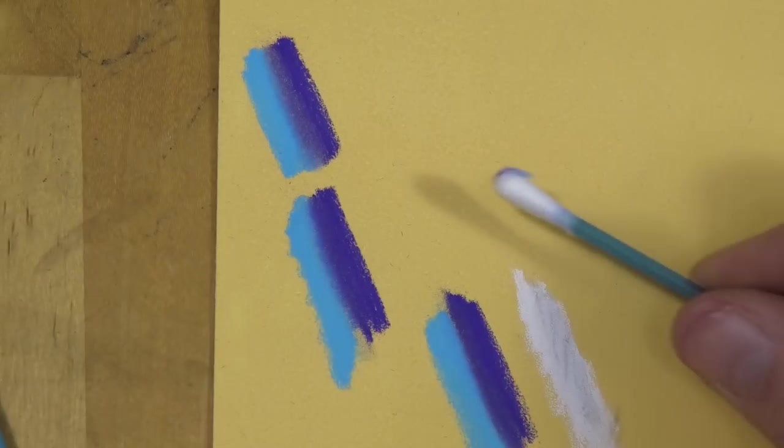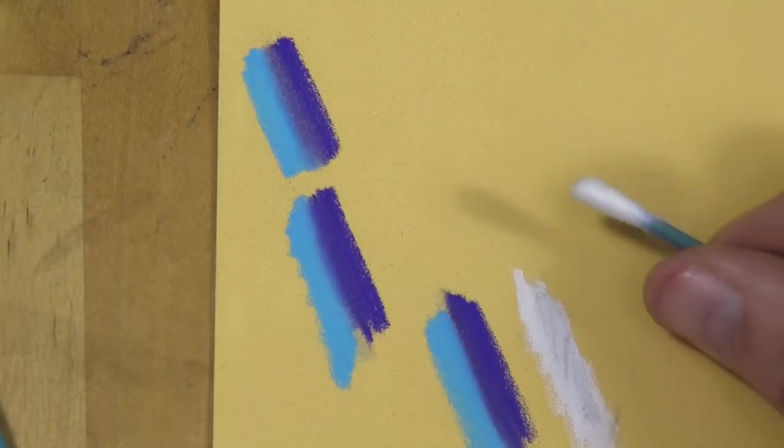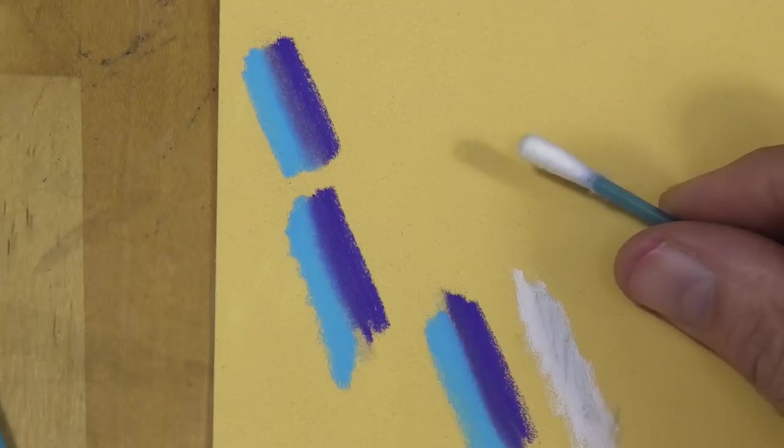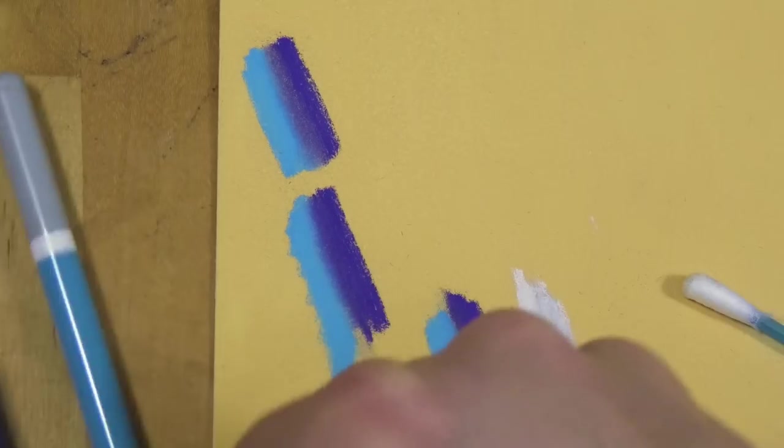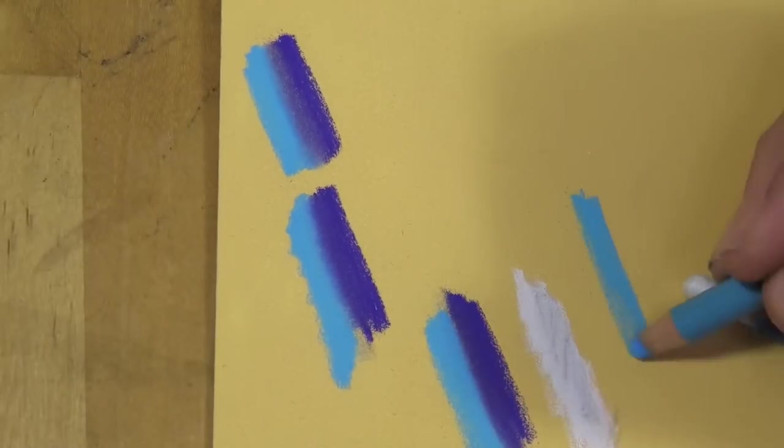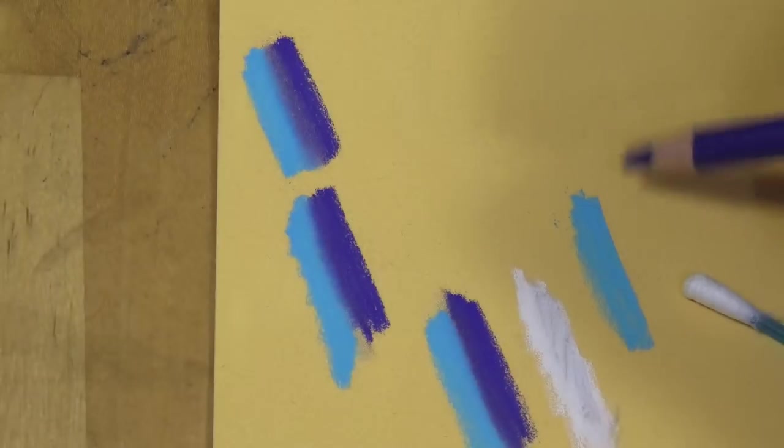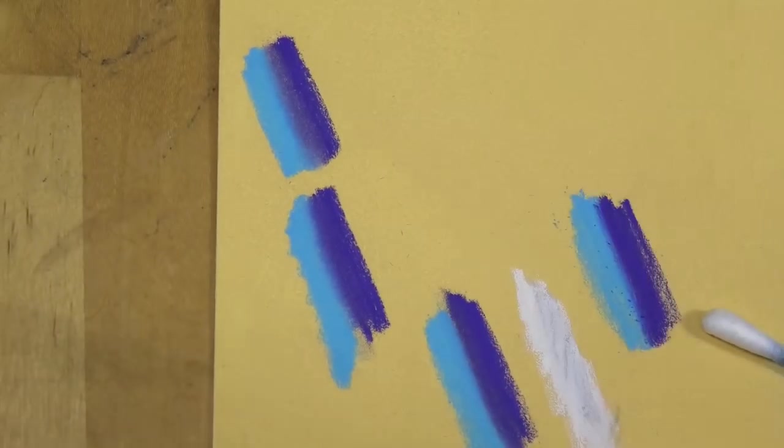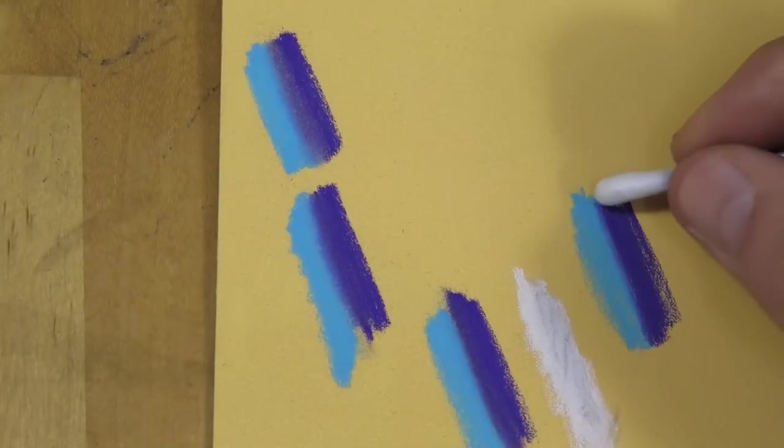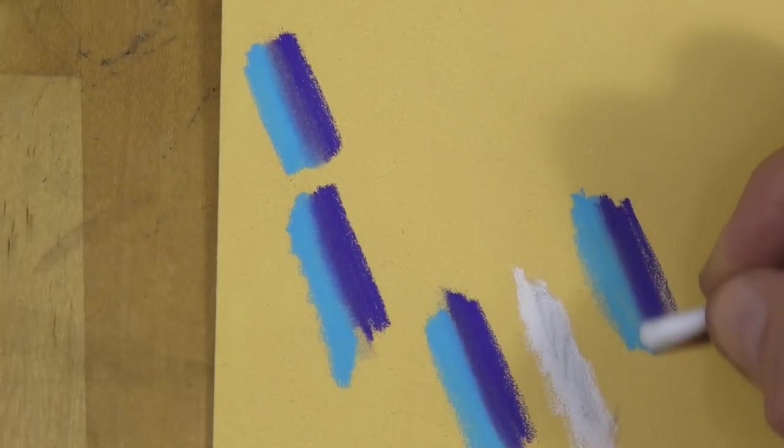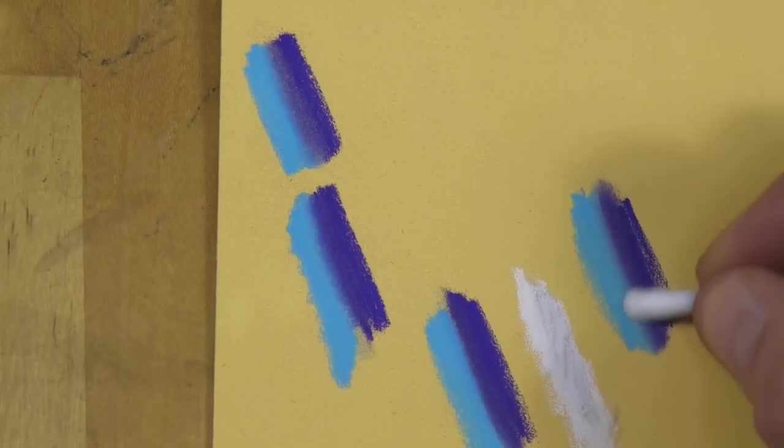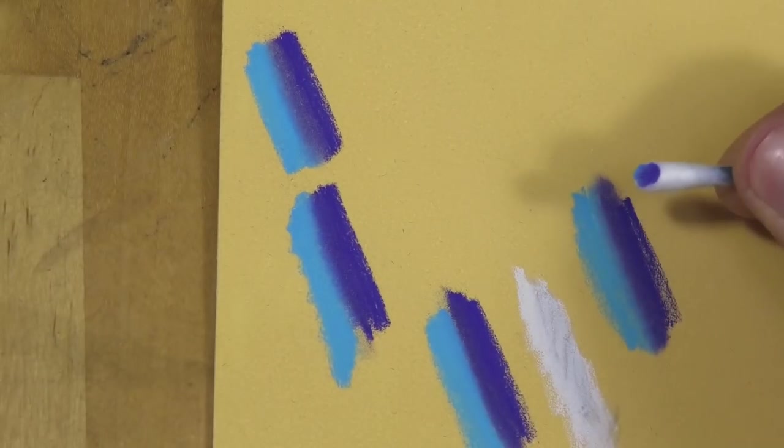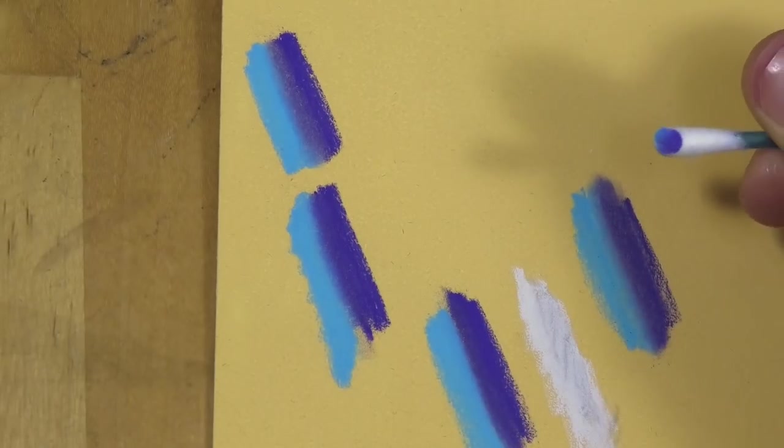People ask me about blending with cotton buds—at least that's what we call them. I think you call them Q-tips in America. If I try to lightly blend, it's pretty much not blending much together and it's just taking it all off. Brushes seem to do the same—it's like a sweeping motion and just removes the pastel.